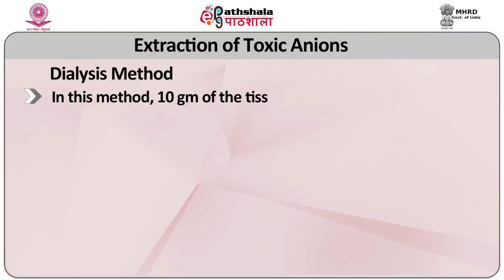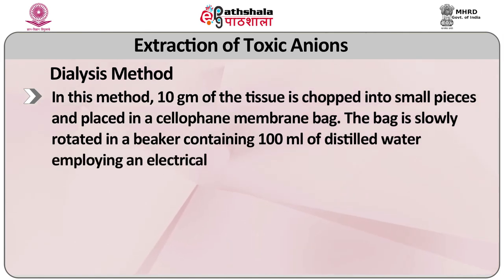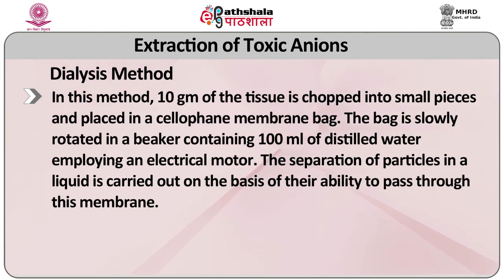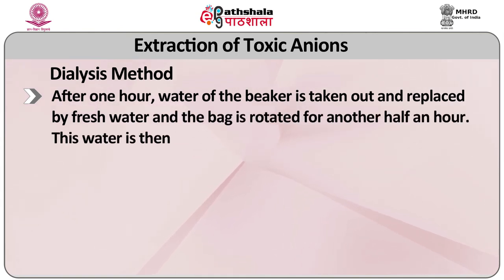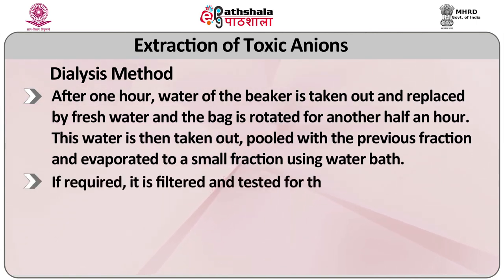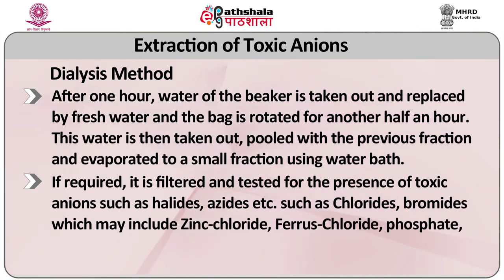The next category of poison is anions, which includes halides, azides, etc. For the isolation of toxic anions, the dialysis method is used. In this method, 10 grams of tissue is chopped into small pieces and placed in a sulfur membrane bag. The bag is slowly rotated in a beaker containing 100 ml of distilled water using an electrical motor. Separation of particles is carried out on the basis of their ability to pass through the membrane. After 1 hour, the water is taken out and replaced by fresh water and the bag is rotated for another half an hour. This water is taken out, pooled with the previous fraction and evaporated to a small volume using a water bath. If required, it is filtered and tested for the presence of toxic anions such as halides, azides, chlorides, bromides — which may include zinc chloride, ferrous chloride — phosphate, sulfate, nitrate, nitrite, etc.